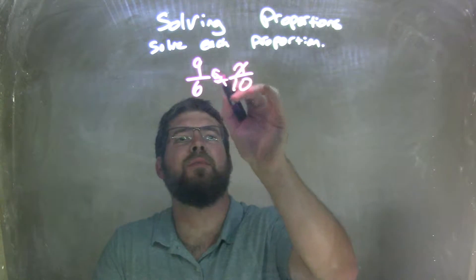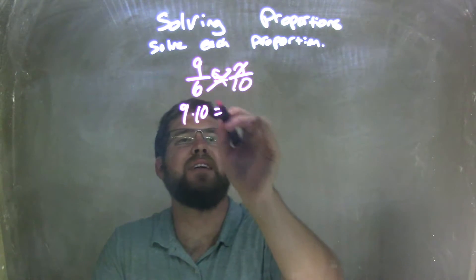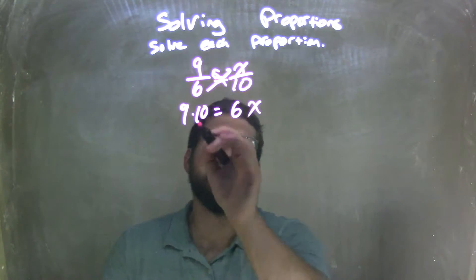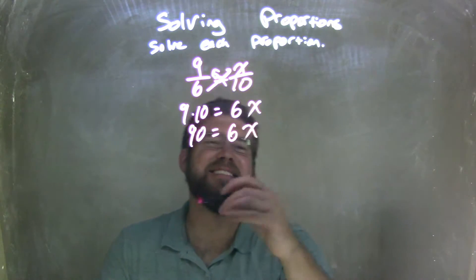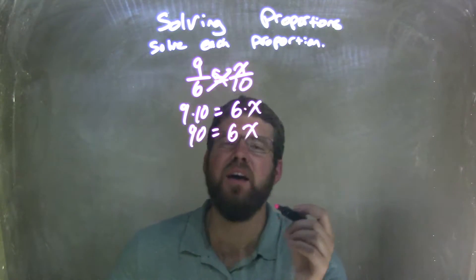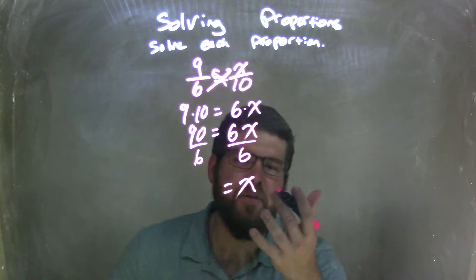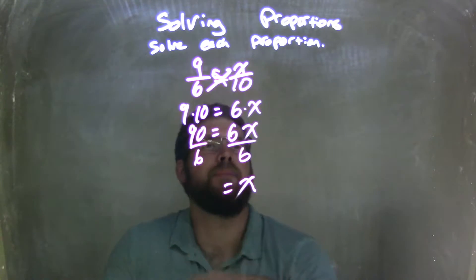Let's cross-multiply this, bring the 10 and 6 up. 9 times 10, we write over here to the left, and 6 times x on the right. 9 times 10 is 90, equals 6x. 6 times x being 6x. Now I need to divide by 6 on both sides to let x be by itself. It needs to be by itself. He's a loner.